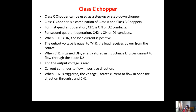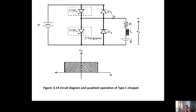Class C chopper can be used as both step-up and step-down chopper. It is a combination of Class A and Class B choppers. For first quadrant operation, CH1 is on and D2 conducts. For second quadrant operation, CH2 is on or D1 conducts. When CH1 is on, the load current is positive, output voltage equals V, and load receives power from source. When CH1 is turned off, energy stored in the inductance forces current through diode D2 and output voltage is zero.